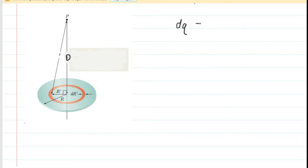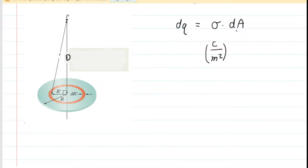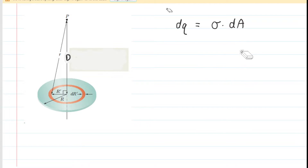DQ is calculus notation meaning a very tiny bit of charge on that thin ring. We've learned that a tiny amount of charge equals the surface charge density — symbolized by sigma — multiplied by the area of the structure, so DQ = σ·dA. Dimensionally, sigma is in coulombs per meter squared and dA is in meters squared; multiplying them gives coulombs, which is the unit of DQ. So dimensionally this equation makes sense.